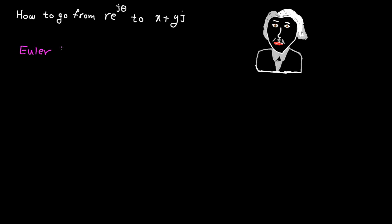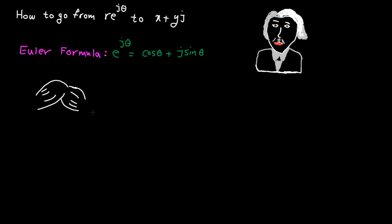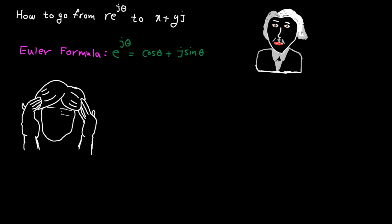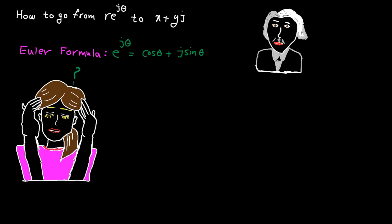Here's the Euler formula: e to the power of j theta is equal to cosine theta plus j sine theta. I really don't want to just show you stuff and ask you to memorize it, because if you just memorize something — especially in math — you've basically wasted your time and it's absolutely useless. Please don't do it. Never, ever.